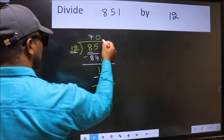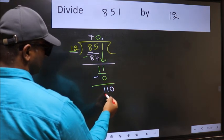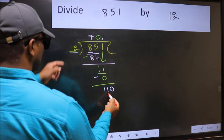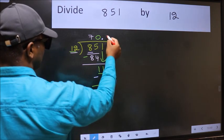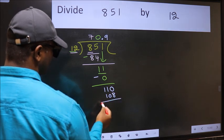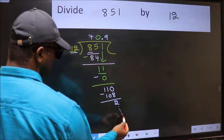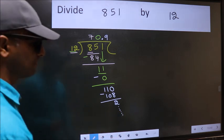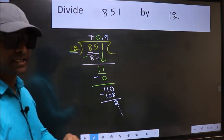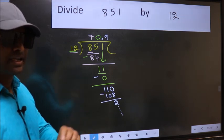So a number close to 110 in the 12 table is 12 times 9, which is 108. Now we should subtract, we get 2. You continue the division; I am not doing that. Did you understand where the mistake happens? You should not make that mistake.